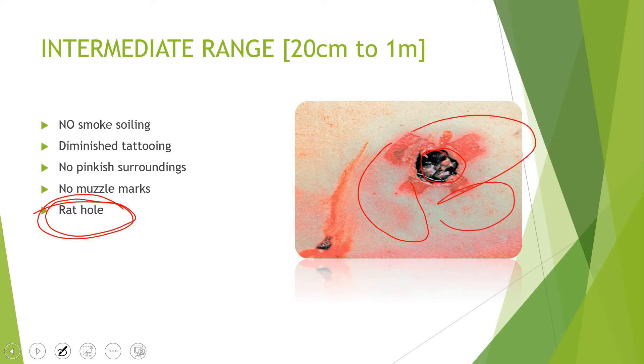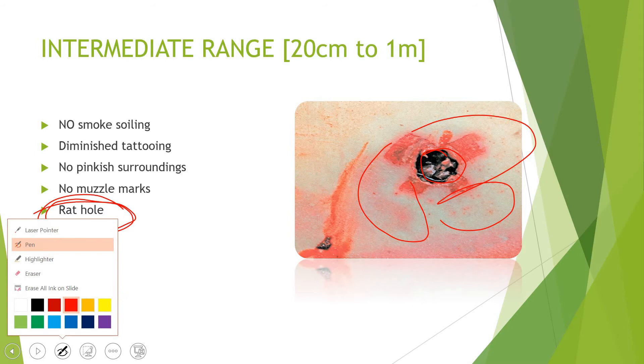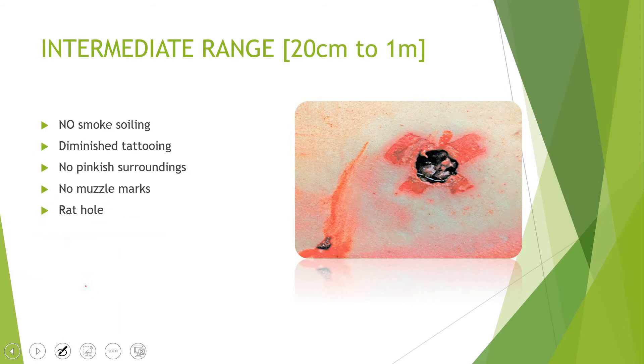These additional injuries removed from the central wound are called satellites, but they are not so pronounced at intermediate ranges. Satellites are more characteristic of long range, which we will discuss in the coming slides.